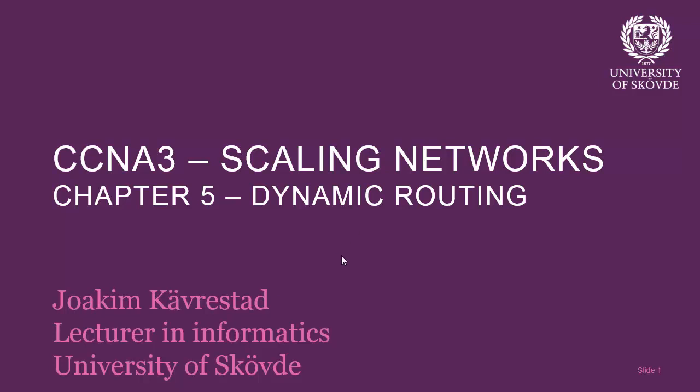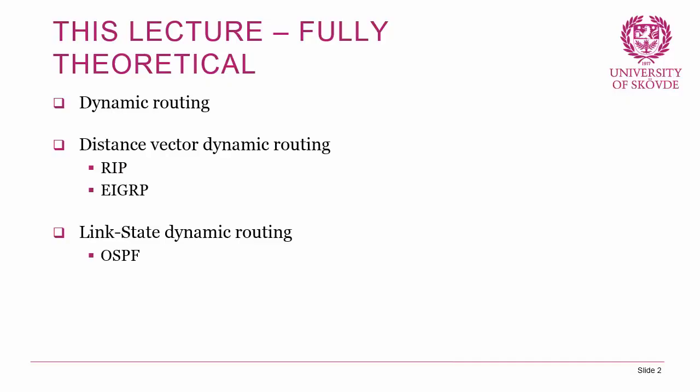Beginning with this lecture, which is a fully theoretical one, we're going to discuss the concept of dynamic routing, what it is and why we need it. Then we're going to look at the different classes of routing protocols like distance vector and link state, and look at some of those protocols in a little bit more detail, keeping it rather brief. The more focused walkthrough will come in lectures 6 to 10, which are going to focus totally on EIGRP and OSPF.